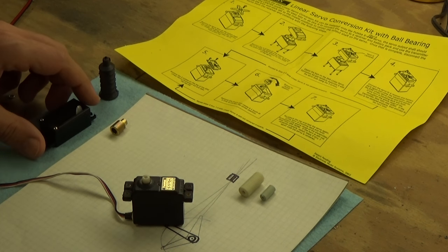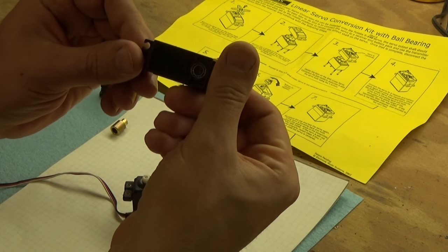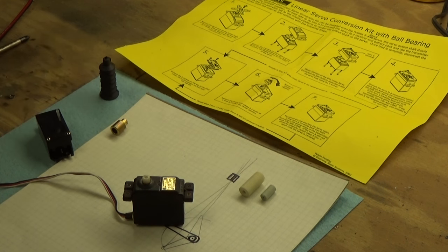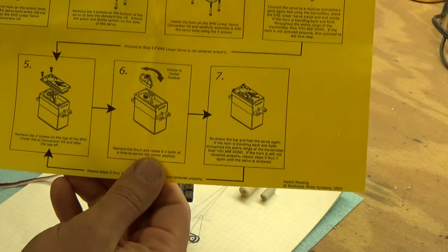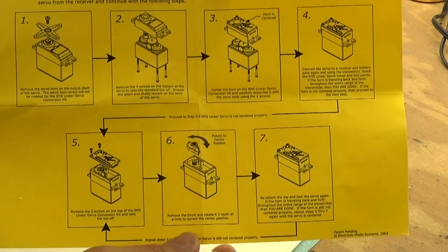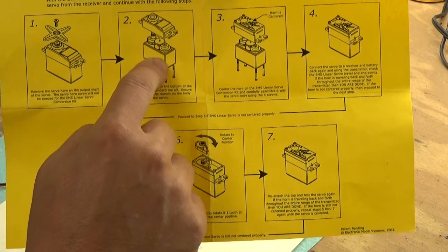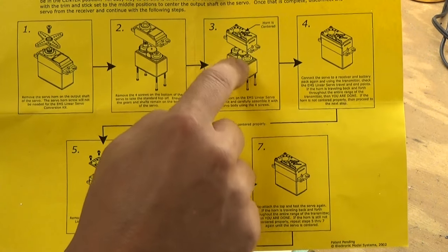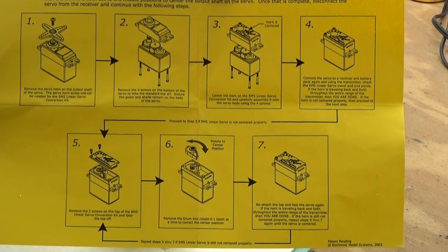Okay, so in the package you get basically your linear servo adapter and a set of instructions. If we take a look at these instructions, basically it is a four part series: you remove the horn, remove the top of the servo, put the new one on and screw everything down. Very straightforward and I'll walk through that with this servo here right now.